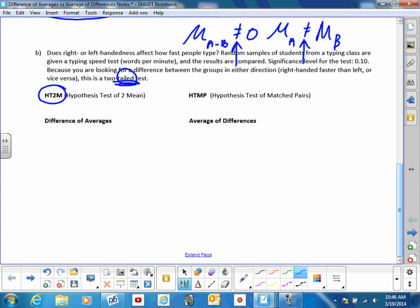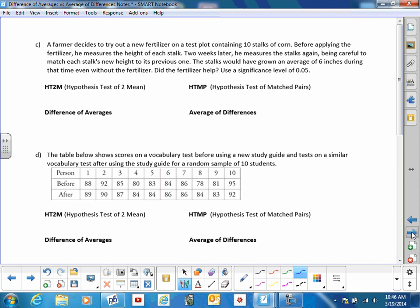Why does it have to be two separate means? Because can a person go, oh, I'm right-handed today, let me take the test, and then the next day, oh, I'm left-handed today, let me take the test. They have to be two separate groups of people. So, am I going to average one list of differences or take the difference between two averages? Difference between two averages. Last one I'm going to do with you, and then I'm going to have you do D, E, and F.